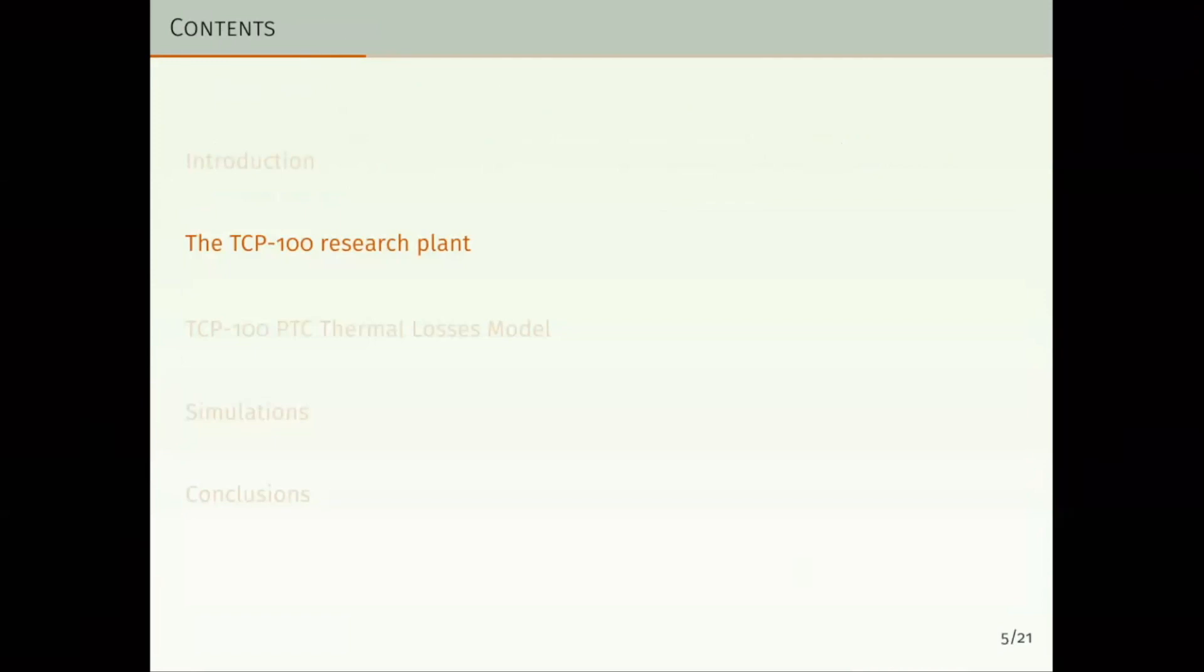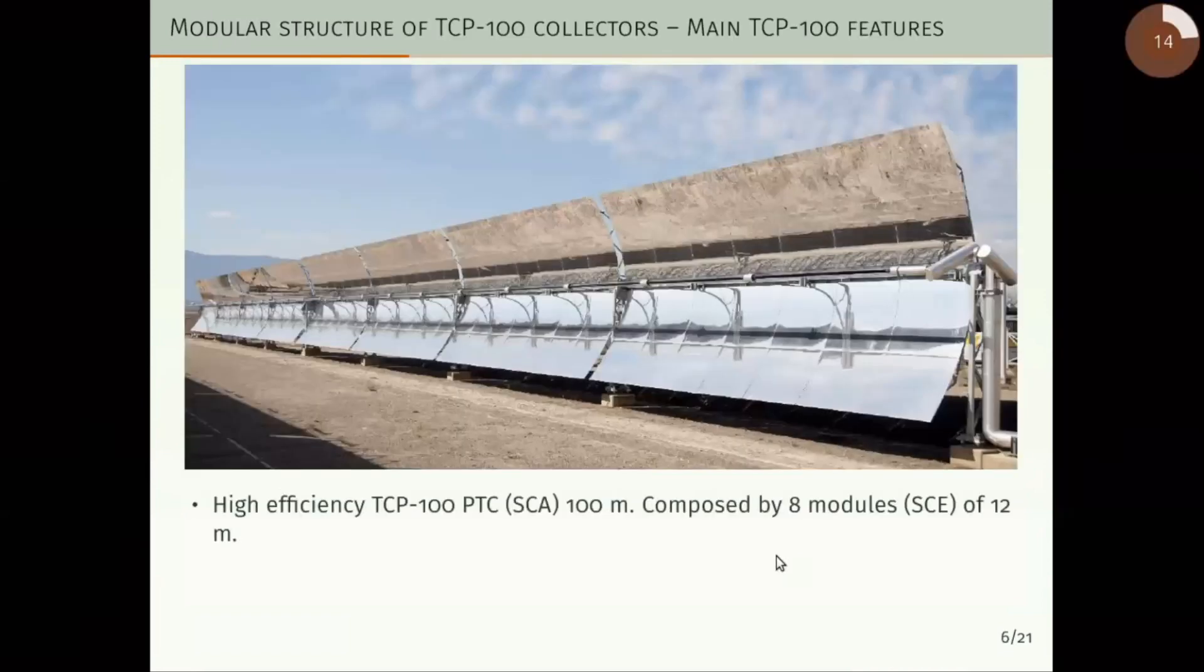Regarding the TCP-100 research plant, in this slide we present a photograph of the first Parabolic Trough Collector of the first of the three loops that are in the TCP-100 facility at Plataforma Solar de Almería. All this type of collectors have an approximate length of 100 meter lengths, all of them composed by 8 modules of 12 meters.